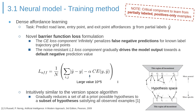The underlying principle is that model predictions should always at least correspond to known positive label elements. This is achieved by heavily penalizing true positive element prediction errors with a theoretically infinite loss. A noise-resistant L1 loss component gradually drives the model output toward a default negative prediction value to avoid a trivial all-positive output. There is also an intuitive similarity between the barrier function loss and the version space algorithm in symbolic machine learning, which reduces an initial set of all possible hypotheses to a subset satisfying all observed examples.